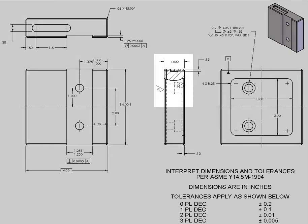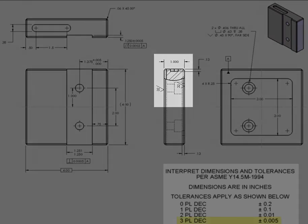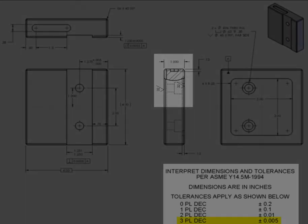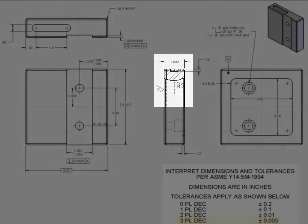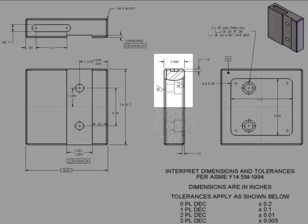The 1 inch part thickness shown in the side view has three decimal places. Thus, the tolerance for the part thickness is 0.01. The minimum feature size is 0.995 and the maximum allowable feature size is 1.005 inches.